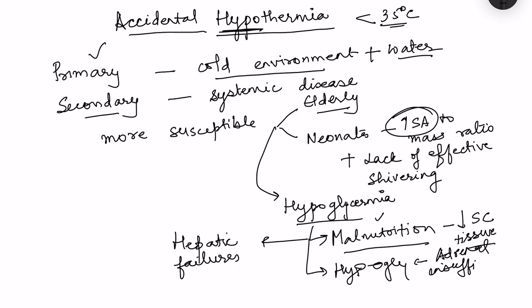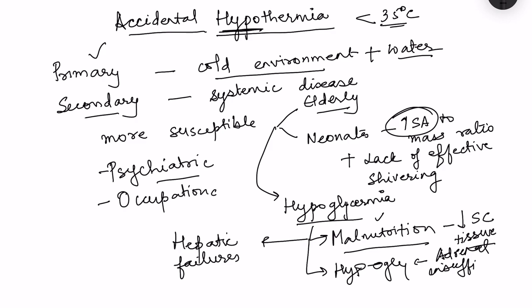Other causes include psychiatric disorders, where the patient doesn't want to defend themselves from excessive cold. There is also occupational hazard, which is essentially a primary cause where the person is exposed to cold environments for long durations. These were certain causes of accidental hypothermia.